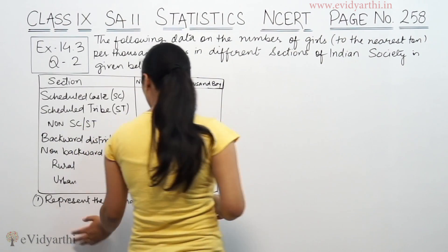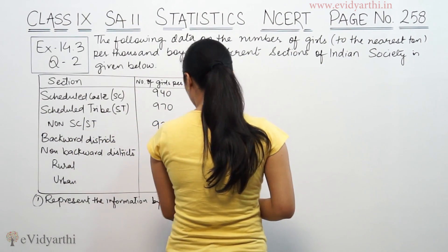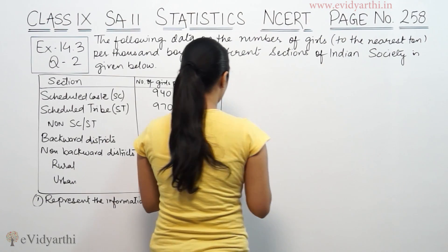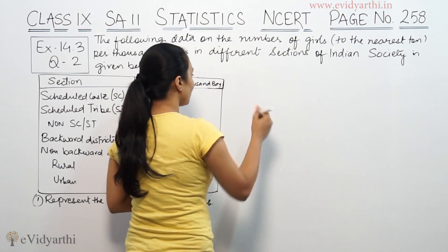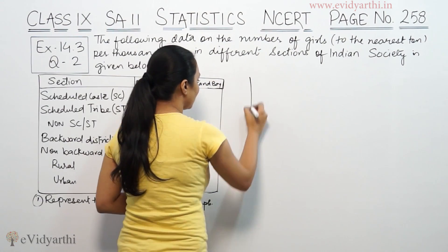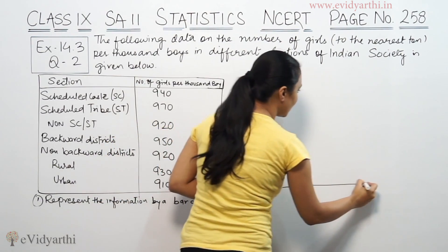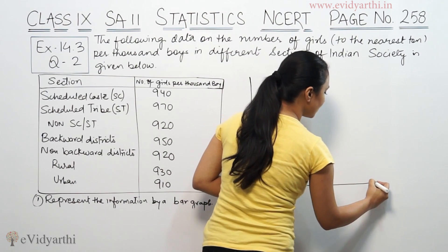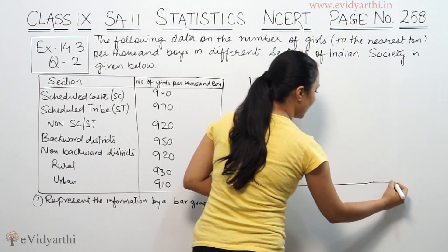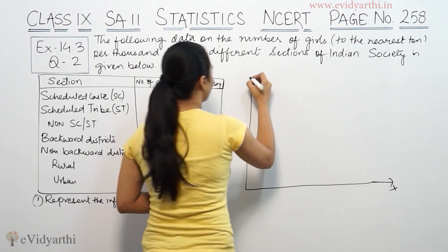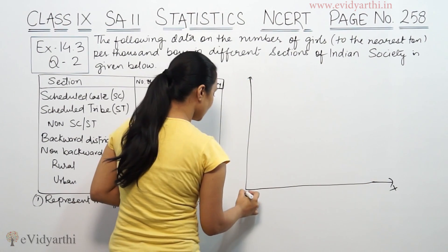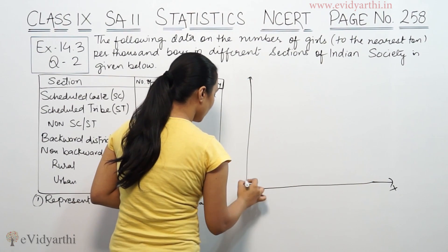So we have to draw a bar graph. The Y-axis and X-axis are set up, with the sections on the X-axis.